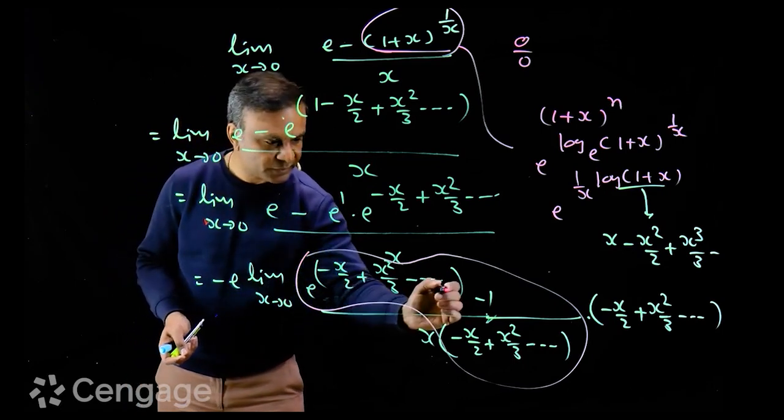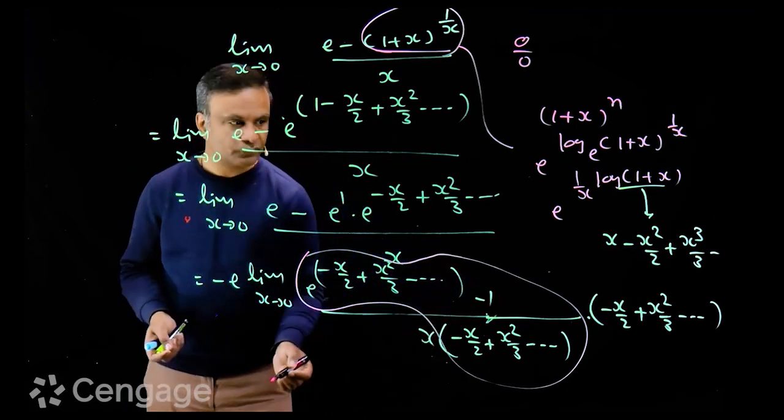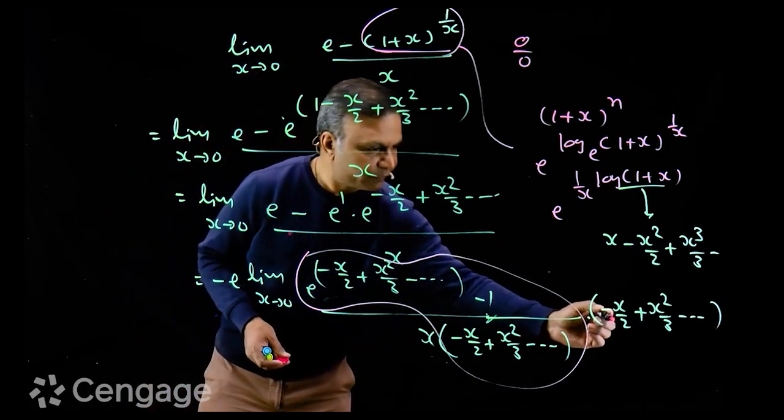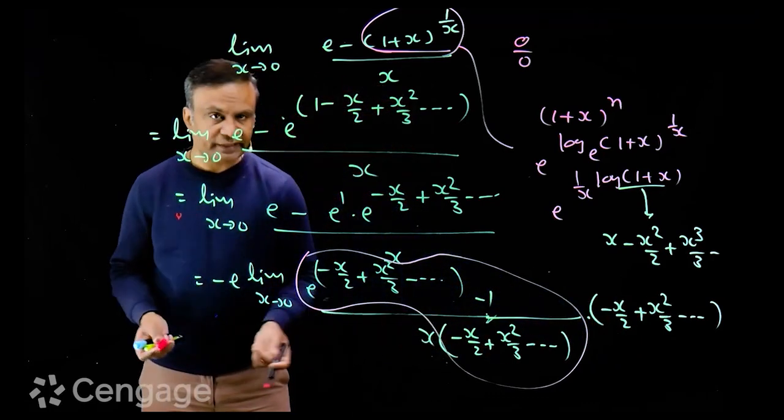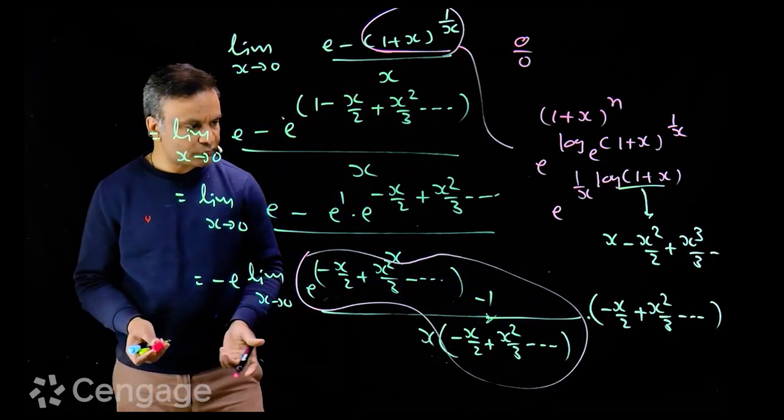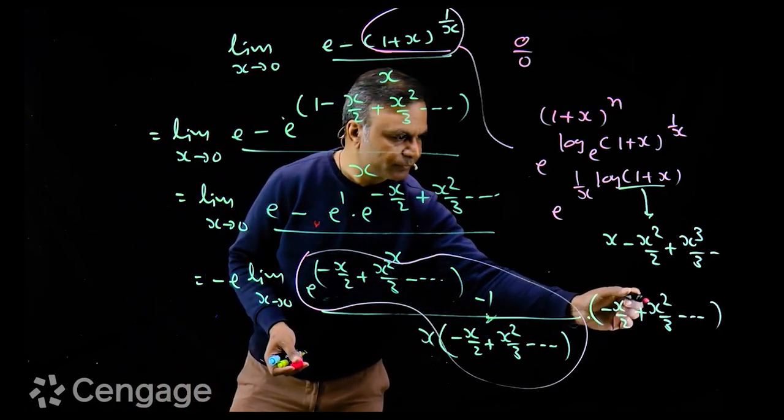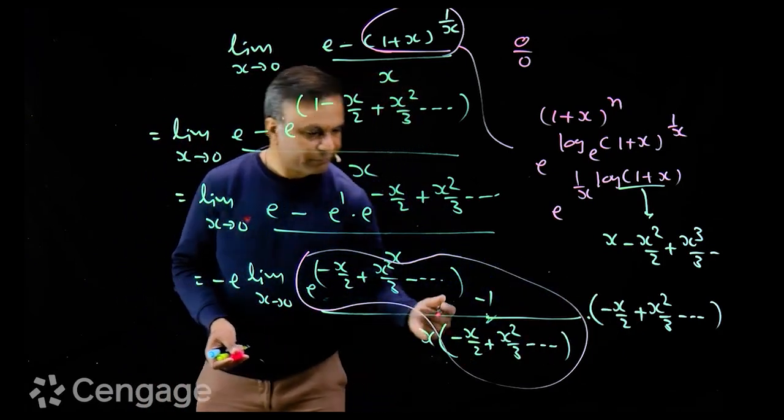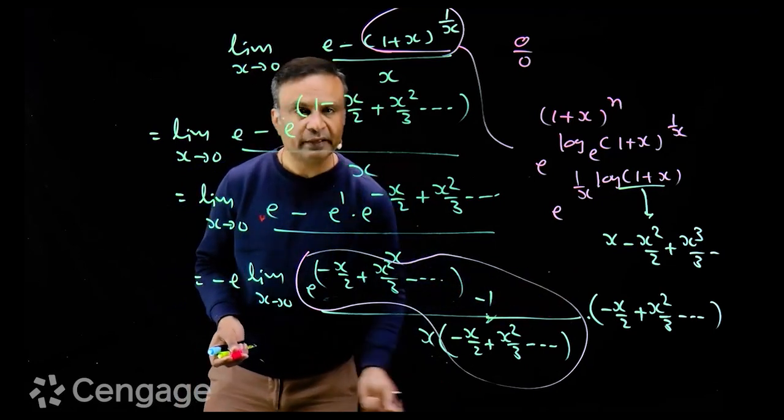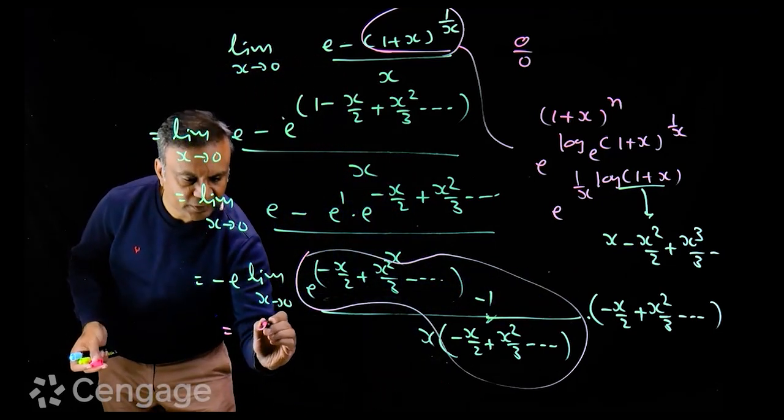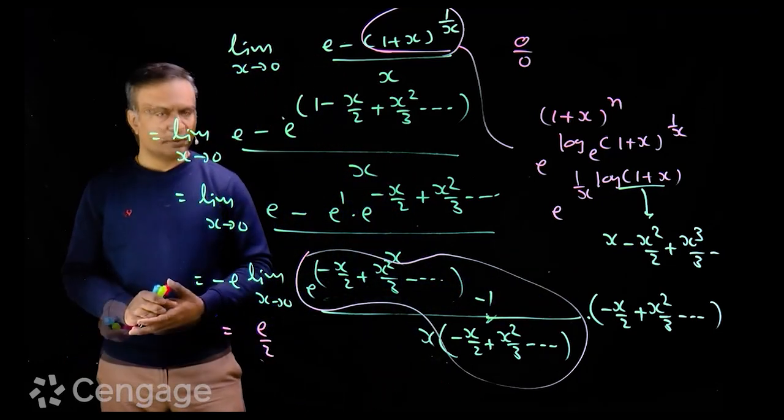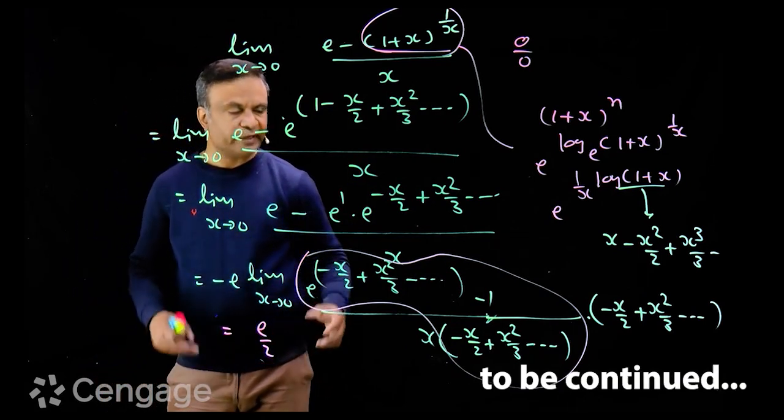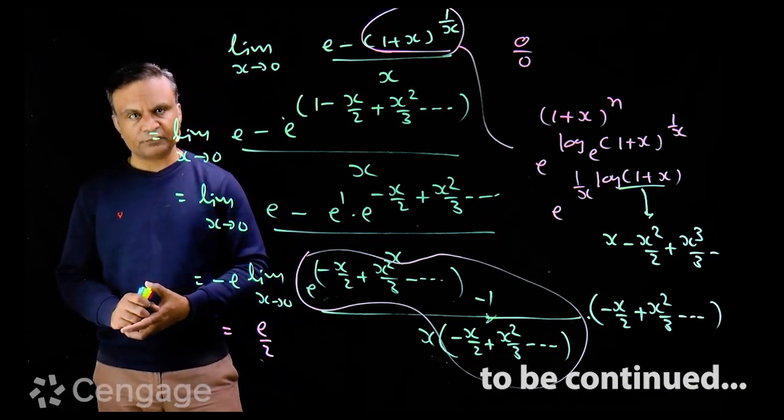So this limiting value is 1 and then we can divide this expression by x because x not equal to 0, it is tends to 0. So here we are left with minus half plus x upon 3 and onwards. And when x tends to 0, this value will be minus half. So the limiting value is e upon 2. So hope you like this question. This is very interesting question using expansion formula.